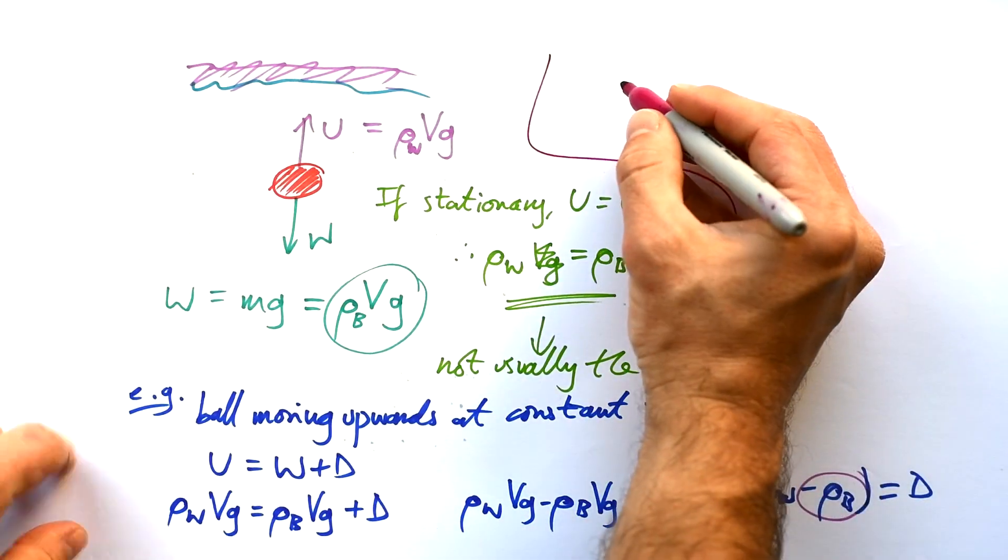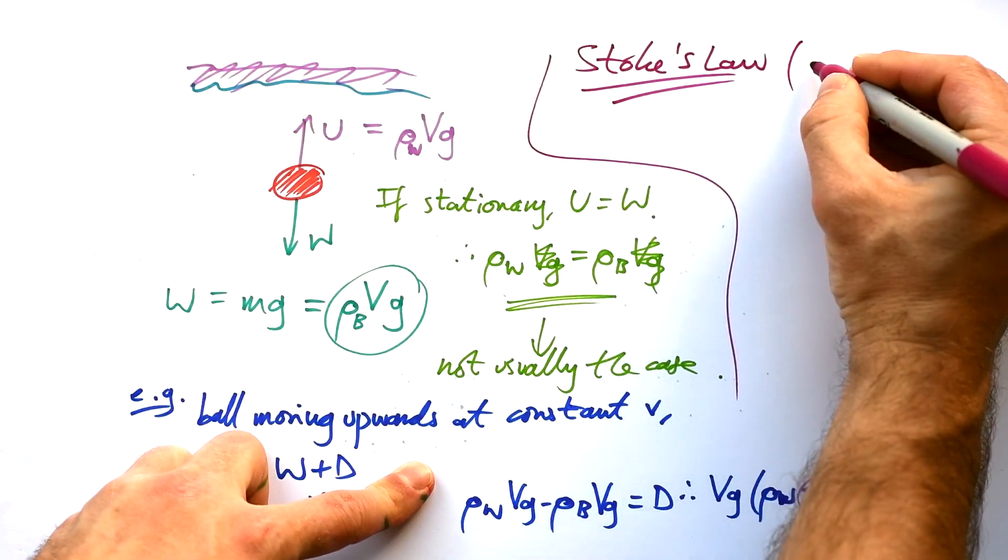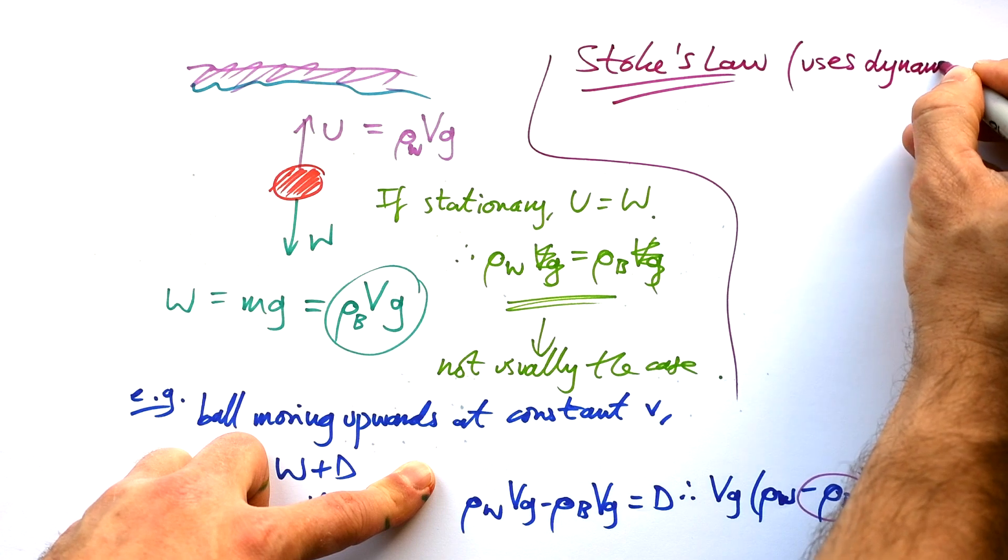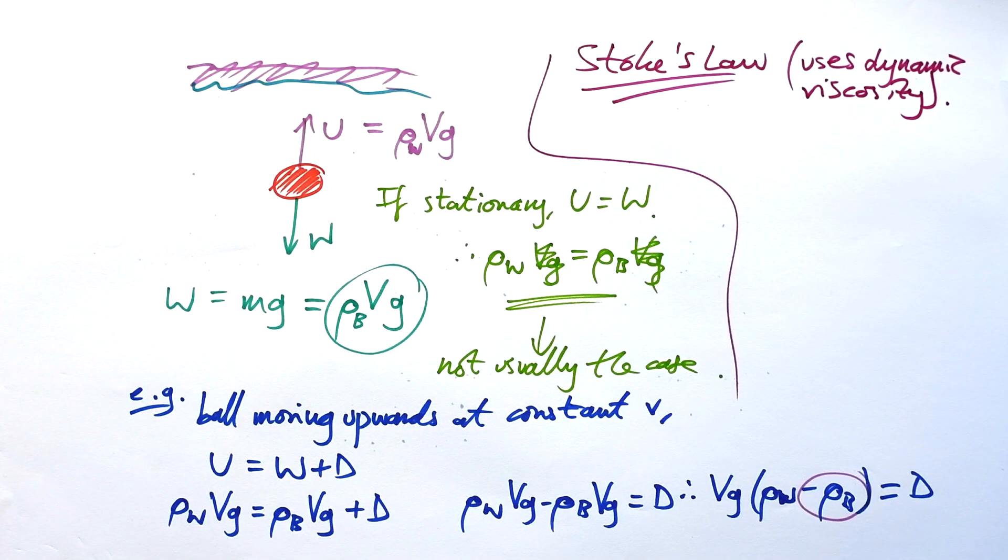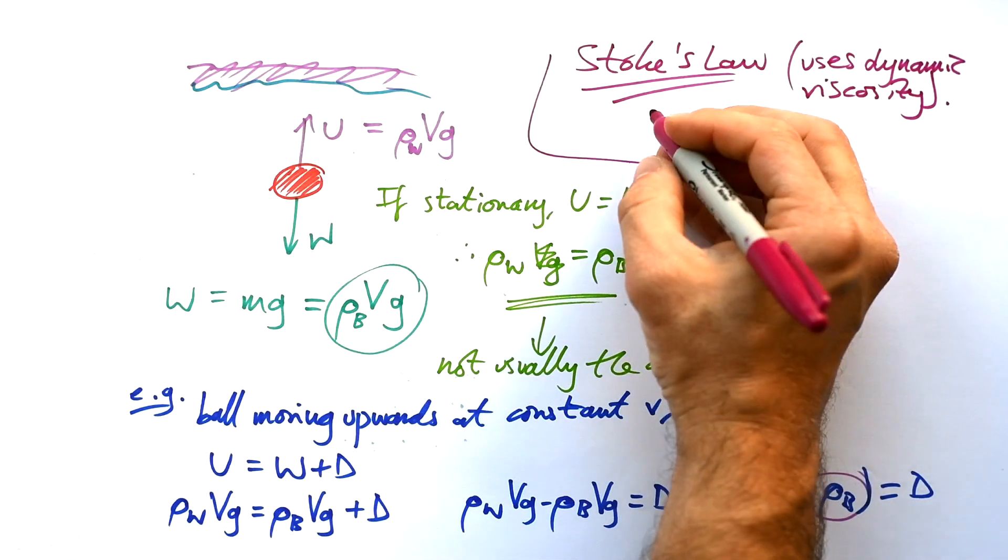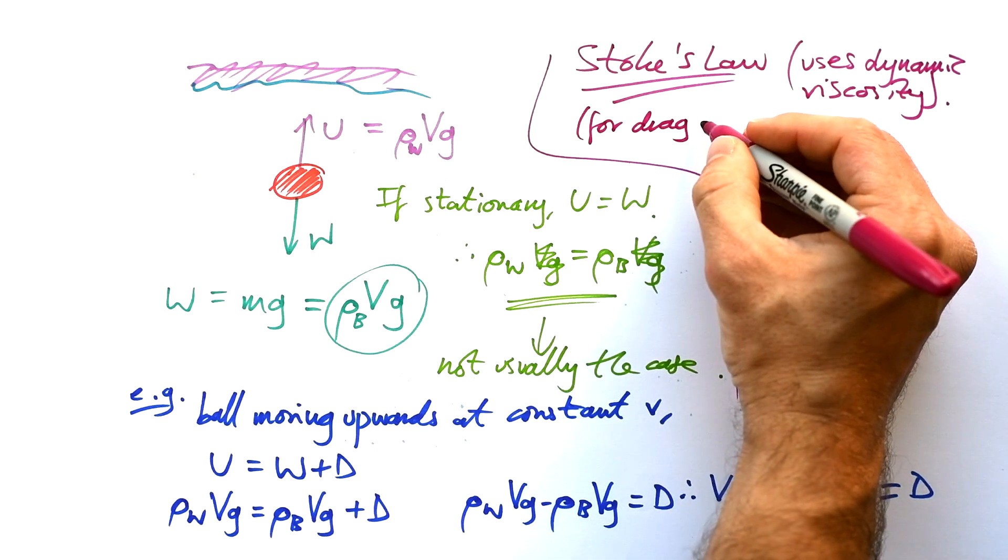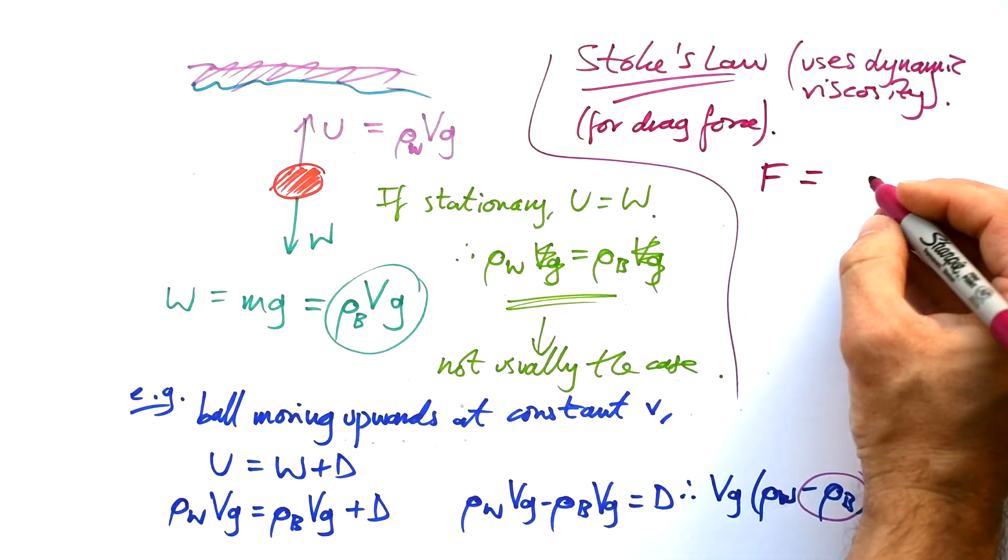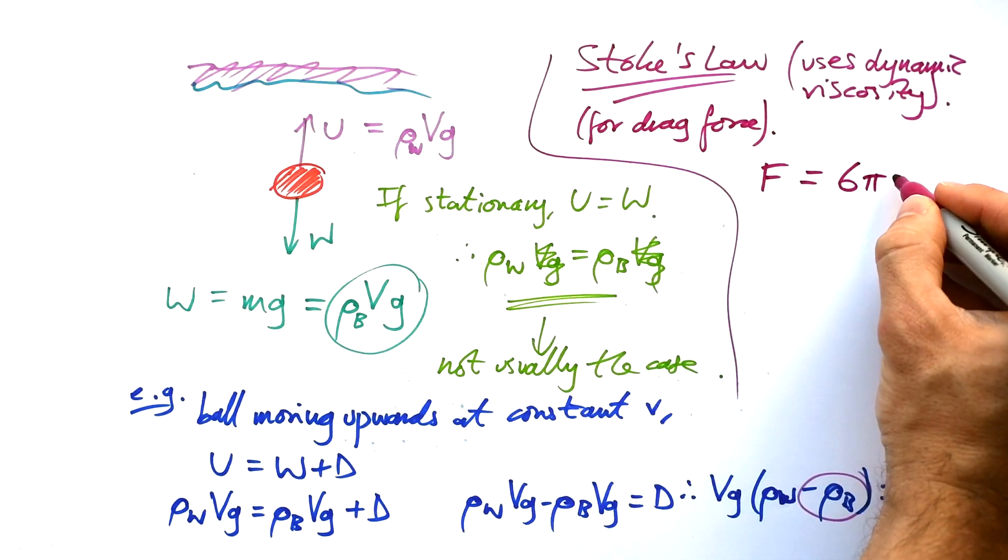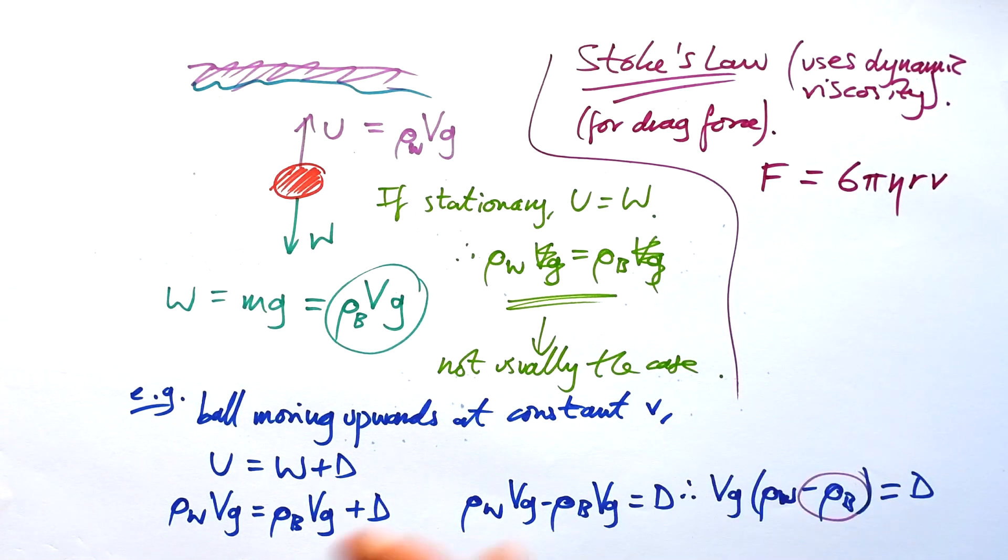There's one more thing that might come up, and that's Stokes' Law. If you see something that uses dynamic viscosity, which is just a constant, then you know you're going to have to use Stokes' Law. Stokes' Law tells you what the drag force is on a sphere in a fluid. And that is F_D = 6πηRV.